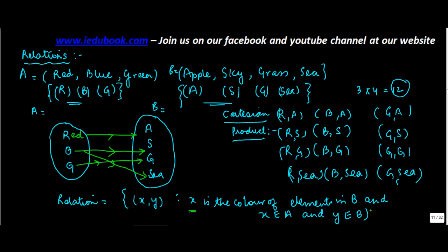So you can define the relationship: X is the color of the element in B. So we have the colors in A and we have items in B. So what I did was I defined the relationship that X is the color of element in B, and X belongs to A.